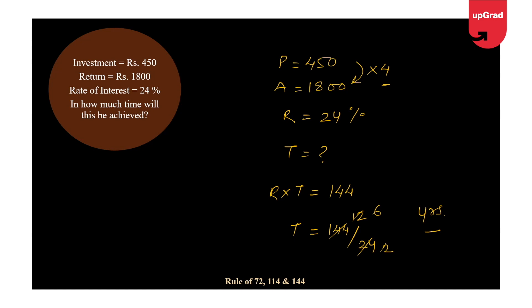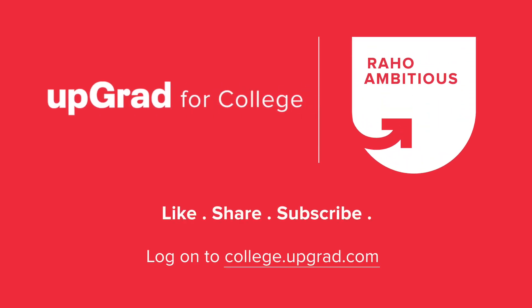That's just one of those tricks — we have many more to come. Remember these three key numbers: 72, 114, and 144. If you like this video, subscribe to our YouTube channel and hit the bell icon to never miss a video from Upgrad.